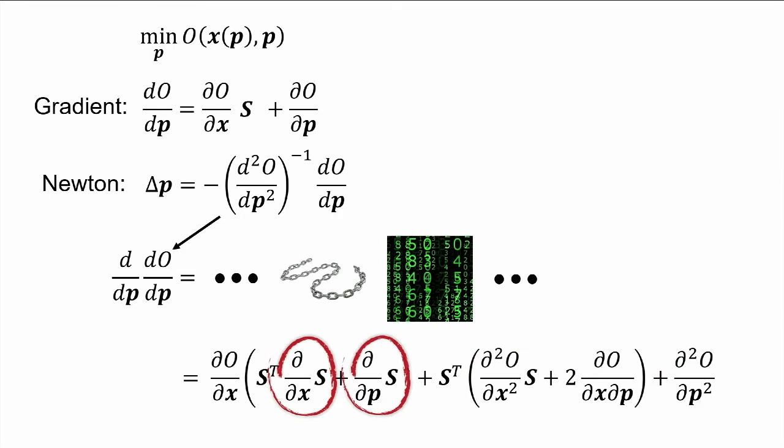Now, we can compute those using the implicit function theorem again. However, those are third-order tensors. So, they typically, it takes a long time to compute them, and also they can cause our Hessian to be indefinite. But luckily, Newton's method can use any positive definite matrix instead of the true Hessian. So, since it's very impractical to compute these higher-order terms, we can choose to neglect them.